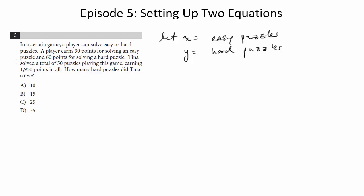And now we start setting up equations. So the first equation we can set up is pretty straightforward. Tina solves 50 puzzles. That means when we add up X and Y, that should add up to 50. So there's our first equation.